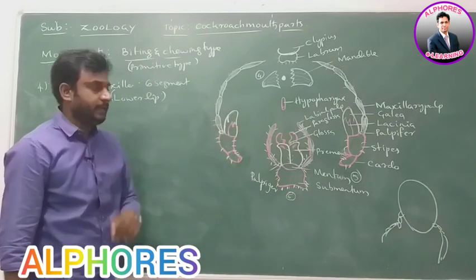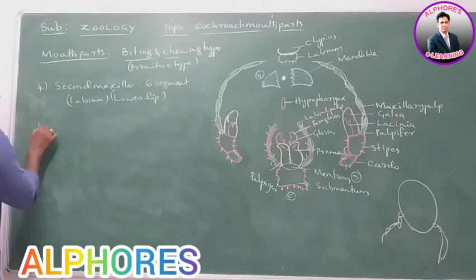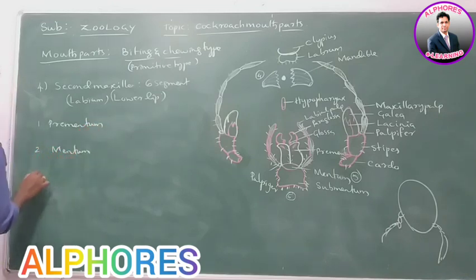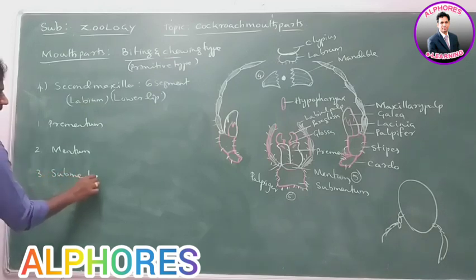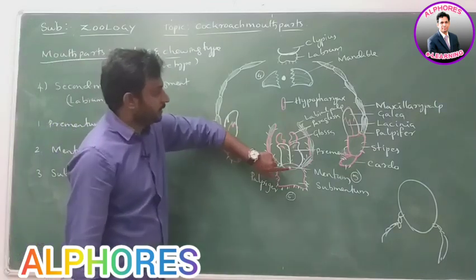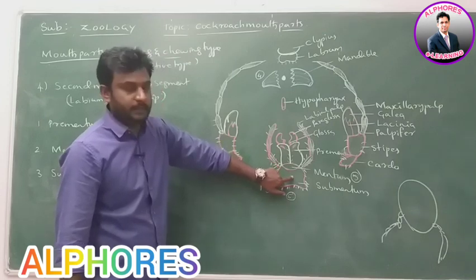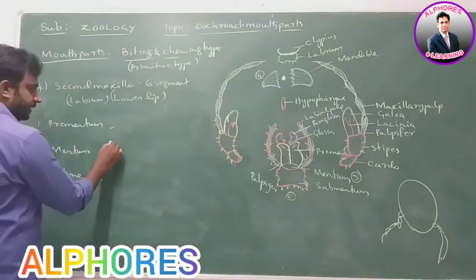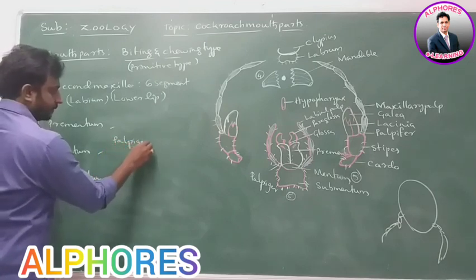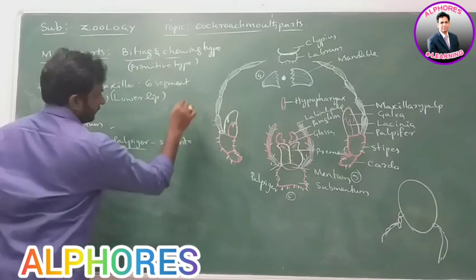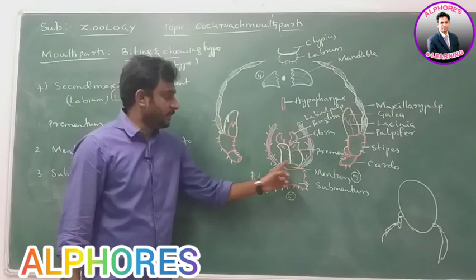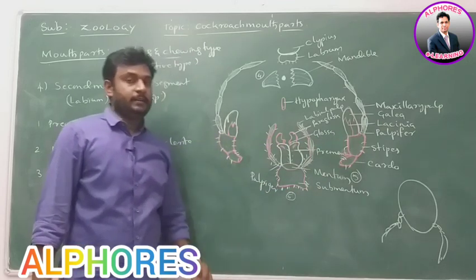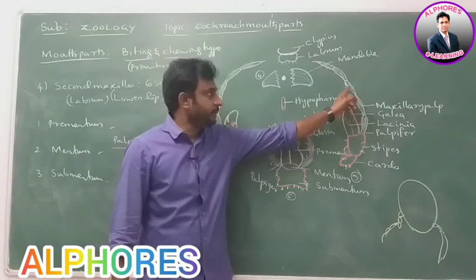Labium or lower lip consists of three parts: prementum, mentum, and submentum. Lateral sides of the mentum consist of a palpiger — palpiger is a sclerite. One pair of palpigers are present on the lateral sides of the mentum.